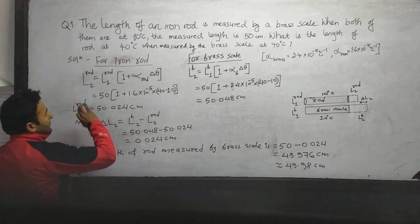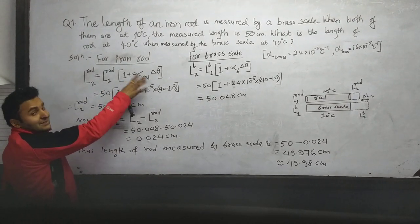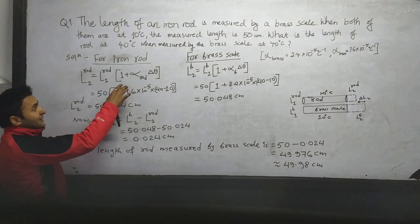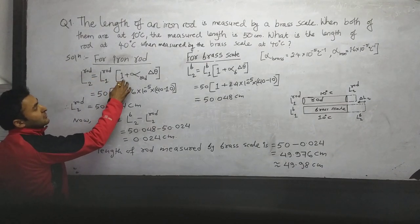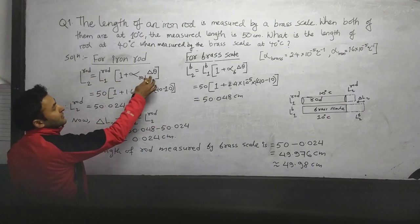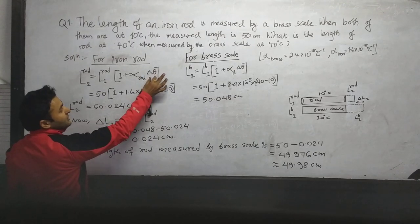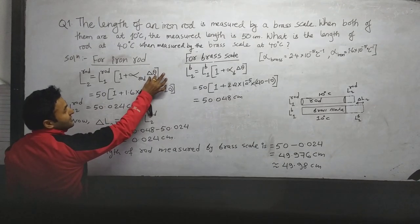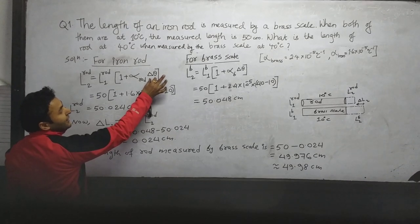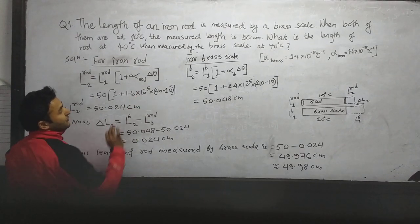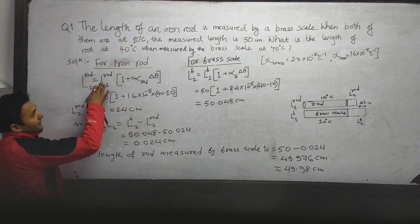We have L2 = L1 × (1 + α × ΔT) from linear expansion. So L2_rod = L1_rod × (1 + α_rod × ΔT), where ΔT is the change in temperature. The initial temperature is 10 degrees centigrade and the final temperature is 40 degrees centigrade, so ΔT = 40 minus 10.